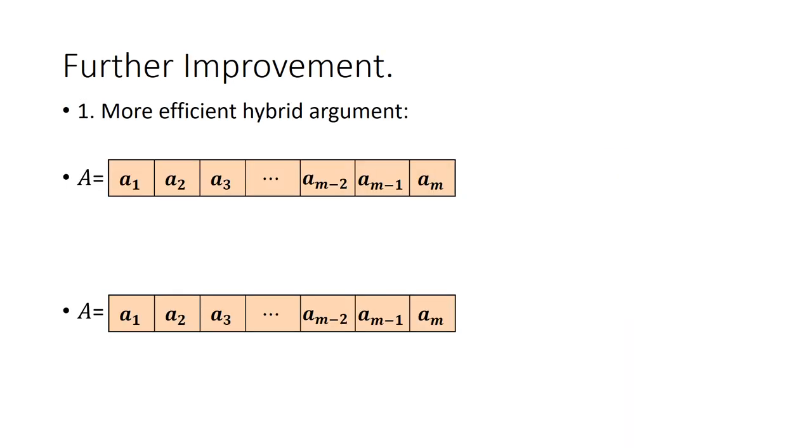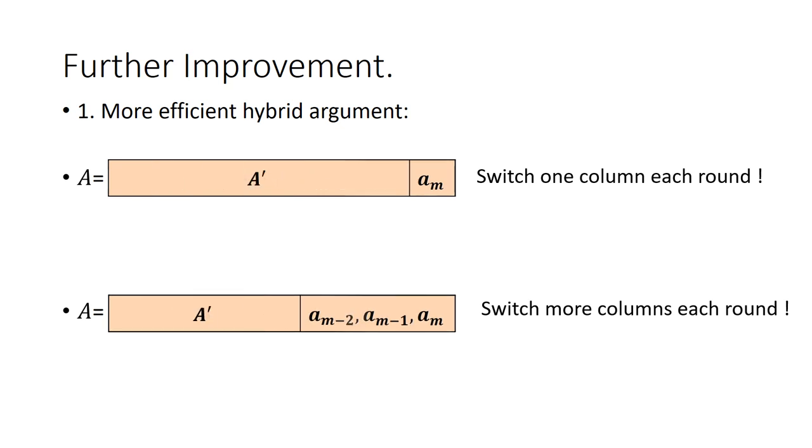Next, we focus on how to remove the dependency on m. We observe that the bug in the proof is that of switching only one column each round. It's a natural approach to try to switch many more columns each round. Clearly, in this way, we can eliminate the dependency on parameter m.